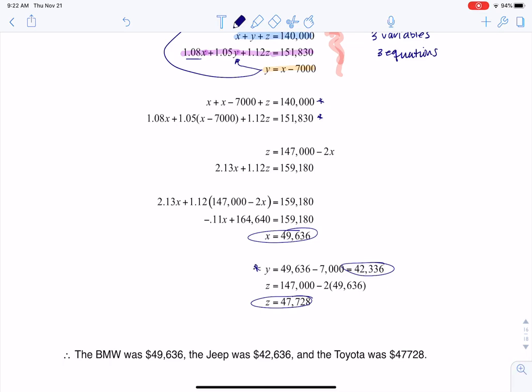So now I see it. There's my Y equals, there's my Z equals, there's my X equals. So those are the prices of my cars. The BMW was $49,636, the Jeep was $42,636, and the Toyota was $47,728. And that is how we do number 61. Thanks so much. Bye.